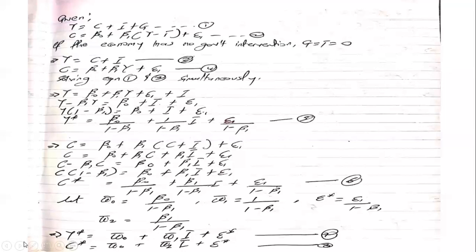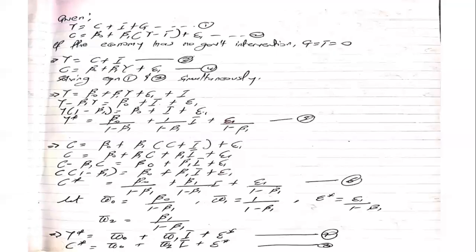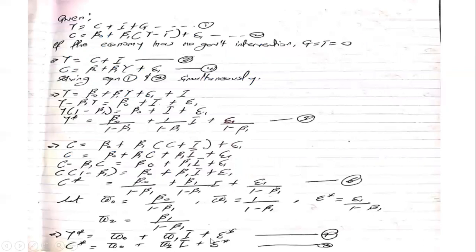Let's look at an example. With appropriate data for Y, C, and I, assuming we apply OLS to equations 7 and 8, suppose they give us specific results. We have been asked to estimate the regression model — meaning to find the regression coefficients beta-naught and beta-one. These correspond to pi-naught, pi-one, and pi-two from the previous slide, not the direct betas.